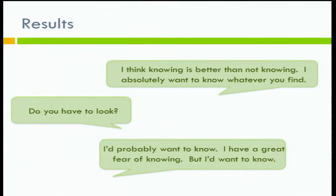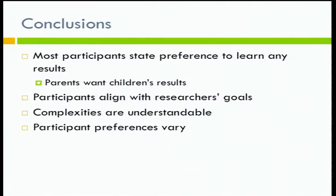A few anecdotal quotes from participants: one father of a child with a rare disorder said about secondary variant results for himself and his child, 'I think knowing is better than not knowing. I absolutely want to know whatever you find.' Another participant asked, 'Do you have to look? That sounds like a whole lot of effort.' Another mom said, 'I'd probably want to know. I have a great fear of knowing, but I'd want to know.' At the end of the day, most people say they want to learn absolutely everything, including parents wanting to learn any and all results available for their children. Some parents have been uncomfortable with the ethical distinctions we've drawn and the idea that we want their children to re-approach us when they can make their own decisions.